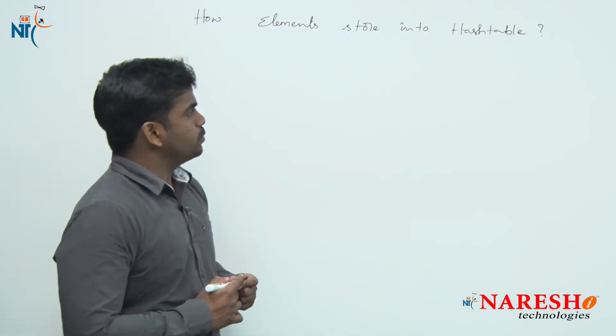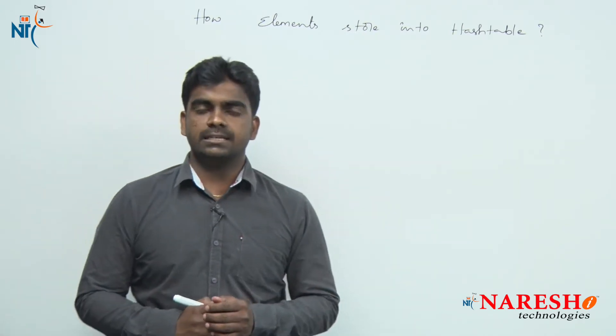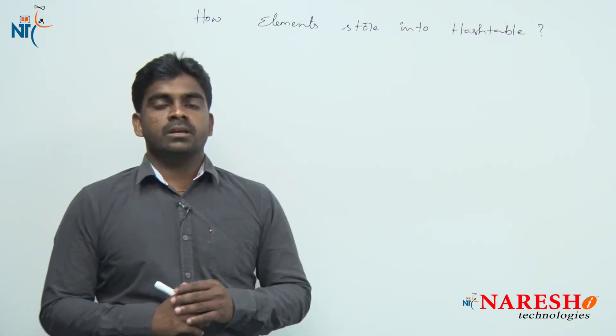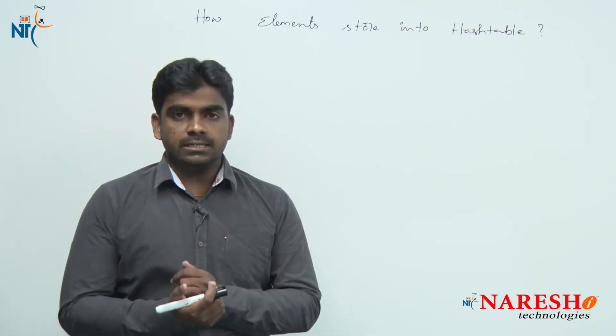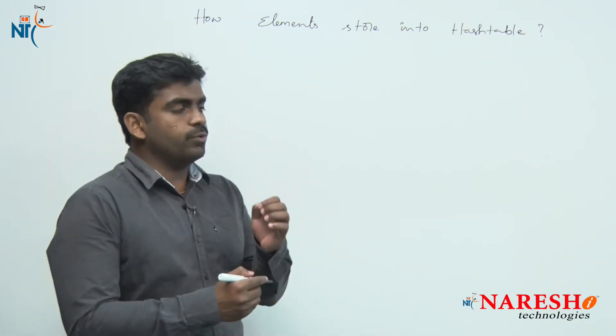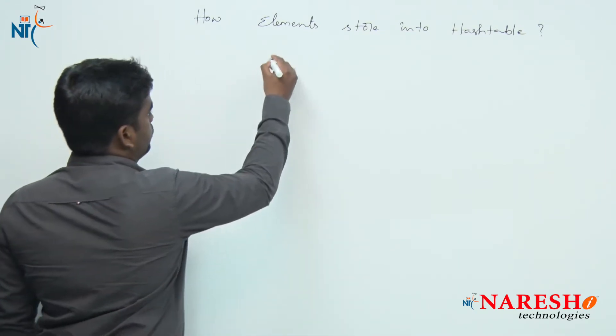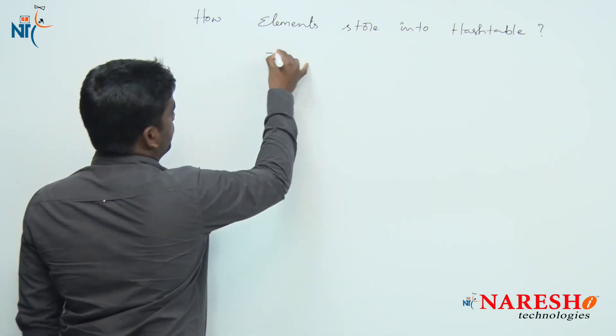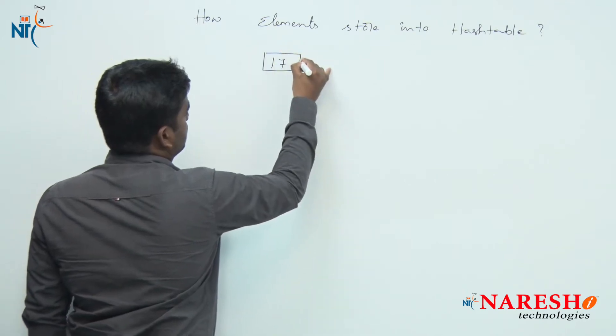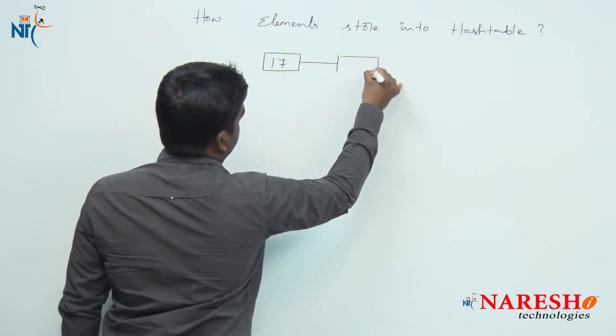First of all, what is the advantage of using hash table? Generally, if you take the linked list, in the linked list if you want to store some elements, for example, I want to store 17, that is connected to another one, for example, 32.